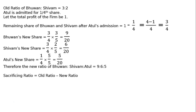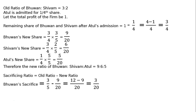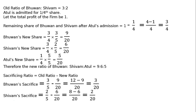Sacrificing ratio is equal to old ratio minus new ratio. Bhuvan's sacrifice: old share 3/5 minus new share 9/20. LCM is 20, so 12/20 minus 9/20 equals 3/20. Sivam's sacrifice: old share 2/5 minus new share 6/20 equals 8/20 minus 6/20 equals 2/20. Atul is not sacrificing because he is the new partner — always gaining. Therefore, the sacrificing ratio of Bhuvan to Sivam is equal to 3 to 2.